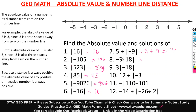Here, we have negative three close to the absolute value sign, so it means negative three times the absolute value of 18. The absolute value of 18 is still 18, a positive 18. And negative three times 18 gives us negative 54 — remember, a negative times a positive is a negative.